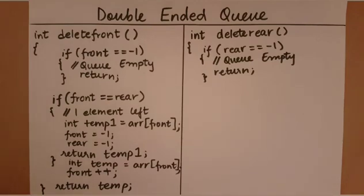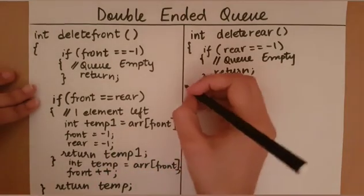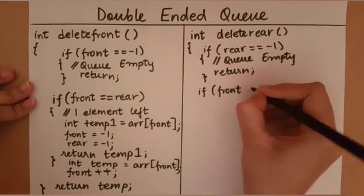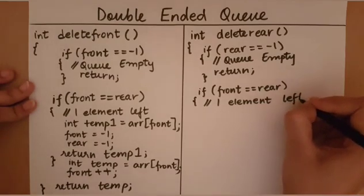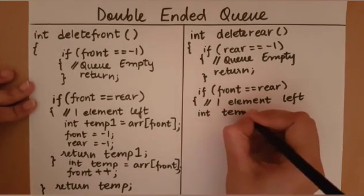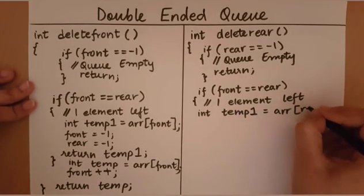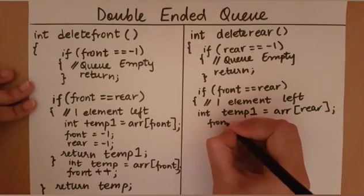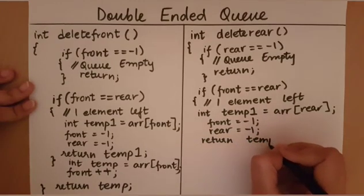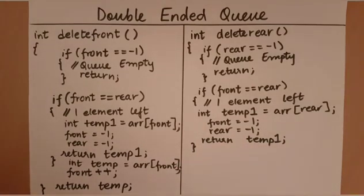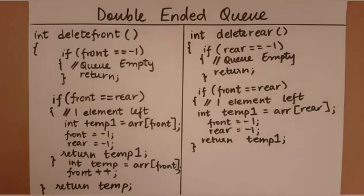The next thing we must check is whether there is only one element left — this is the same check as in deleteFront, where front is equal to rear. If there is only one element, we store that element in a temporary variable temp1, reset front and rear back to minus one, and return the temporary variable.